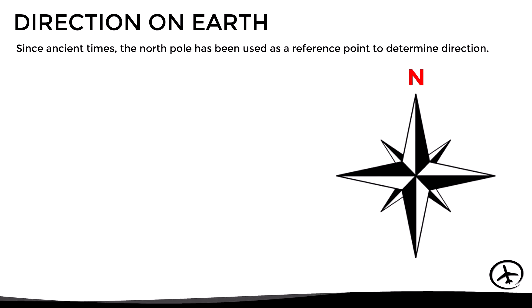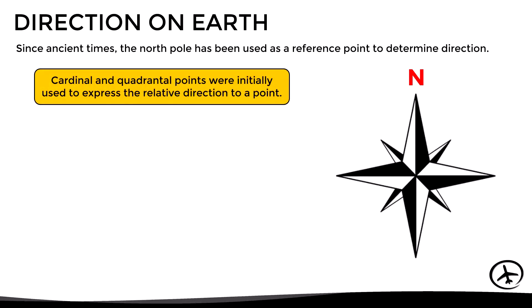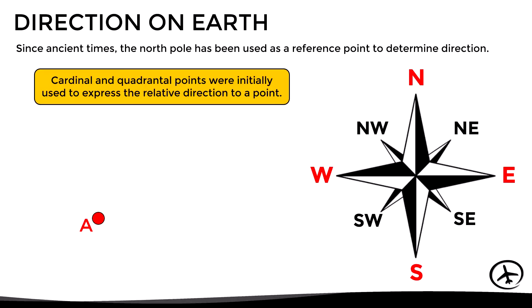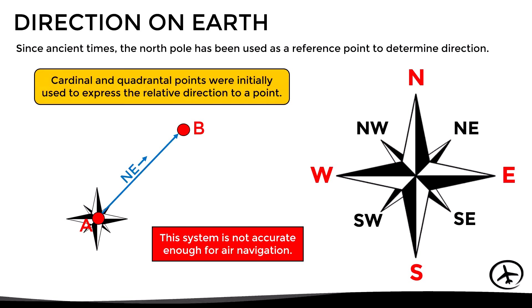Cardinal and quadrantal points were initially used to express the relative direction to a point. The main cardinal points are north, south, east, and west, while the quadrantal points are northeast, southeast, southwest, and northwest. For example, if we are at point A and we want to express the direction to point B, we would say it is to the northeast. Although this system is widely known and used, it is not accurate enough for air navigation.